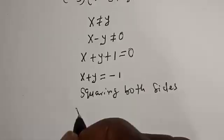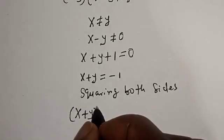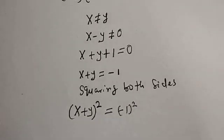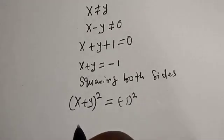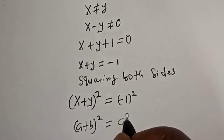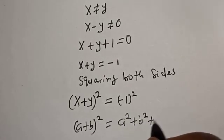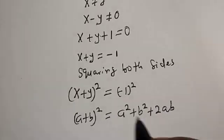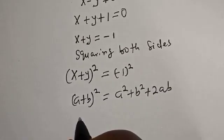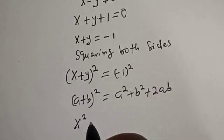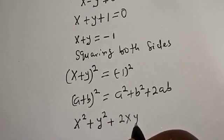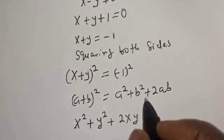Now let's square both sides: (x plus y) squared is equal to (minus 1) squared. Using the identity (a plus b)² = a² + b² + 2ab, where a is x and b is y, we get x squared plus y squared plus 2xy is equal to 1.